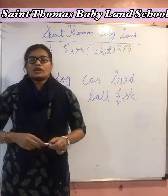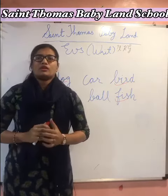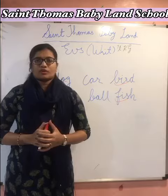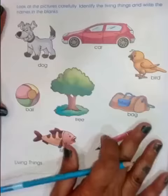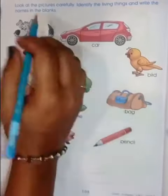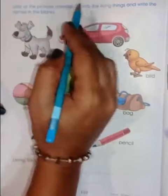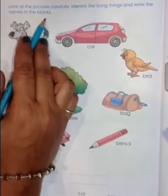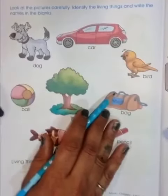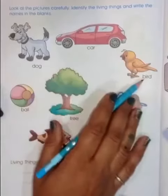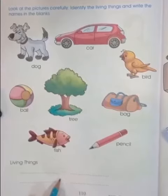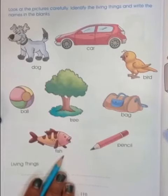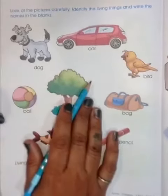Now we have to write in our book, page number 110. All of you open your book Creepers, page number 110. In our E.V.S. subject, our topic is: look at the pictures carefully, identify the living things and write the names in the blanks. Here we have some pictures like dog, car, birds, etc. And here we have four blanks — in these blanks, we have to write the living things. Let's start.